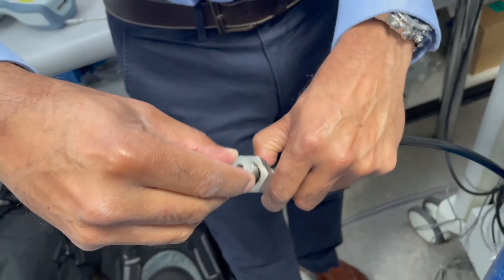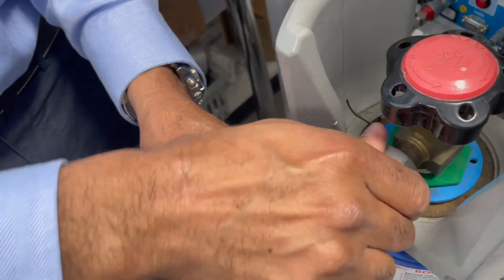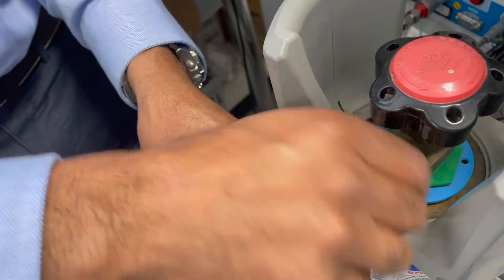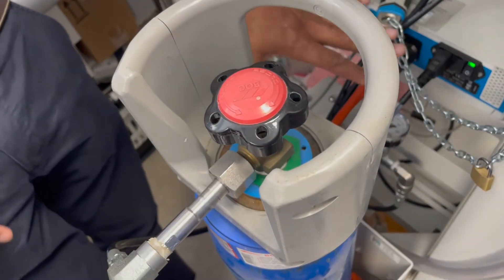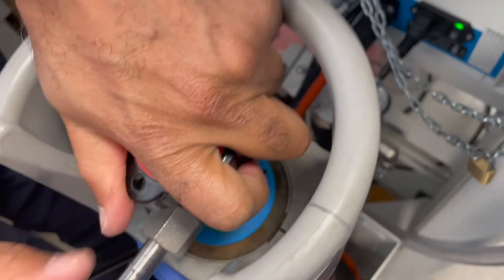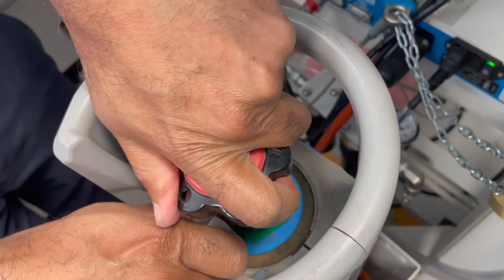When you are threading this, try not to cross thread it. I'm going to try hand tightening this today just to see if it works. Just to check the pressure again I'm going to open it. Let's listen for leaks because I'm hand tightened.